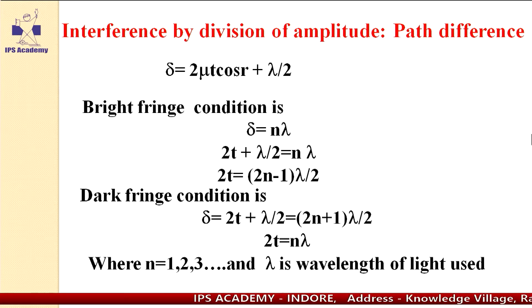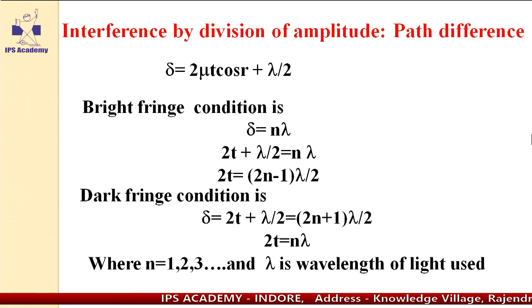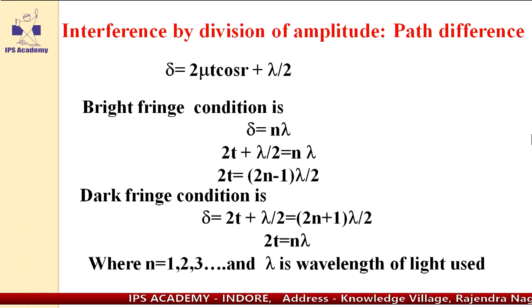So 2t equals (2n minus 1) lambda by 2. This is the condition of bright fringe.